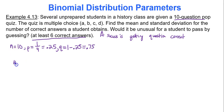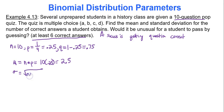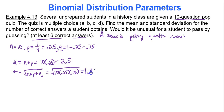Calculate the mean: n times p — that's 10 times 0.25 — and that gives you 2.5. For sigma, the square root of n times p times q — the square root of 10 times 0.25 times 0.75. Multiply the three values together and then take the square root: you get approximately 1.369.